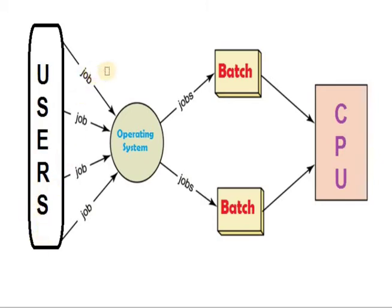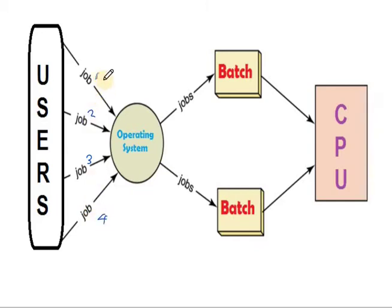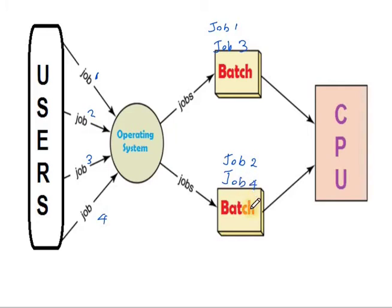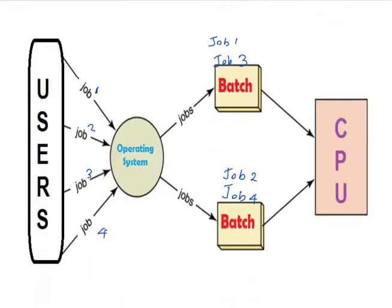Suppose different users submit different jobs. The operating system classifies one type of job into a batch. For example, Job1 and Job3 may be one type, and Job2 and Job4 may be another type. Jobs of the same type are classified and batched together. Then the CPU executes one batch, then moves to the next batch. This is batch processing.